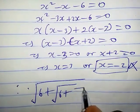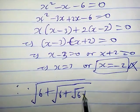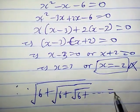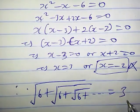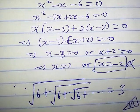Therefore, the square root of 6 plus the square root of 6 plus the square root of 6 and so on equals 3. This is the required solution. Thanks for watching.